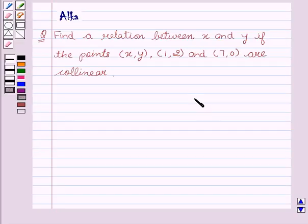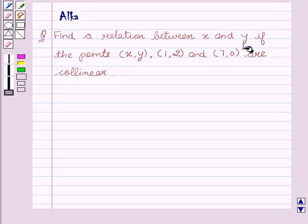Hello friends, welcome to the session. I am Alka. Let's discuss the given question. Find a relation between x and y if the points (x, y), (1, 2), and (7, 0) are collinear.